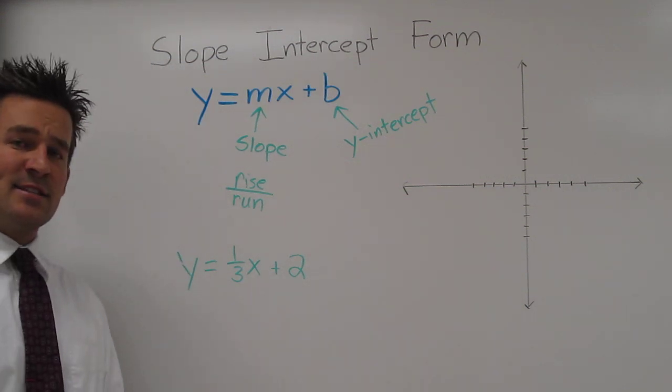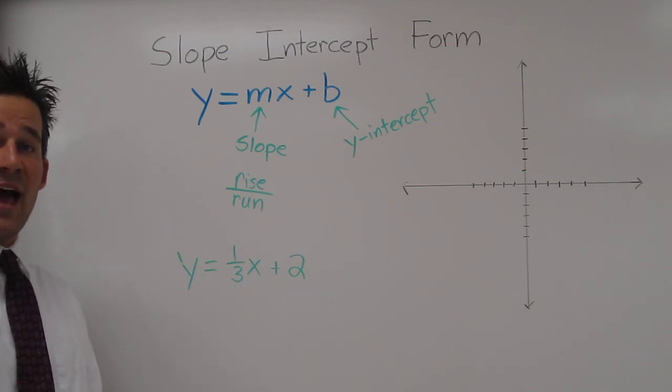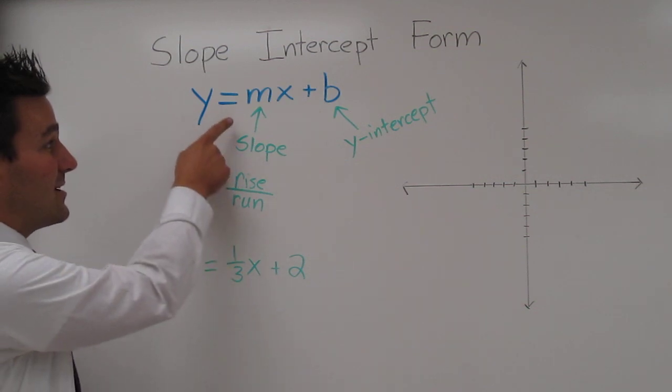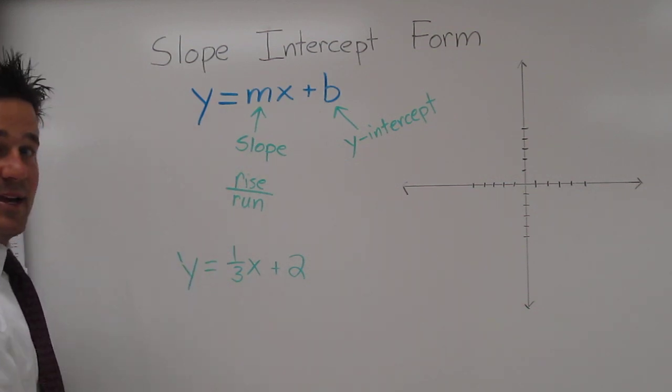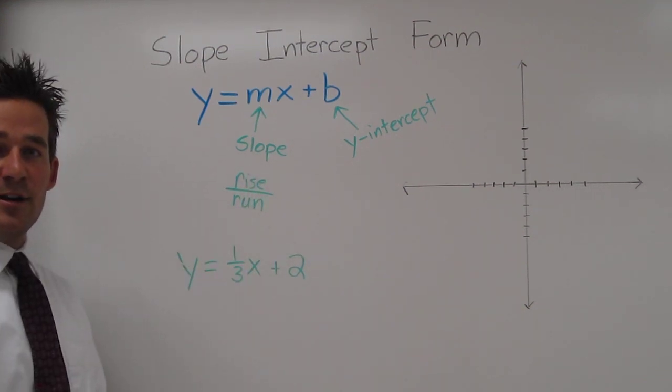If we recognize this as slope-intercept form, we know that the coefficient before the x is the slope. So the one-third is our slope. The rise is 1, the 3 is the run. And we also know that 2 is our y-intercept.